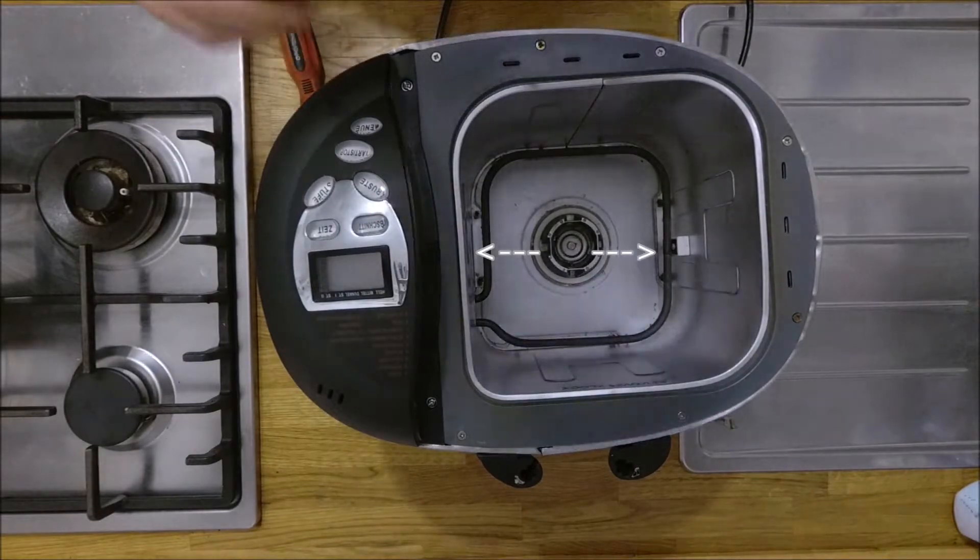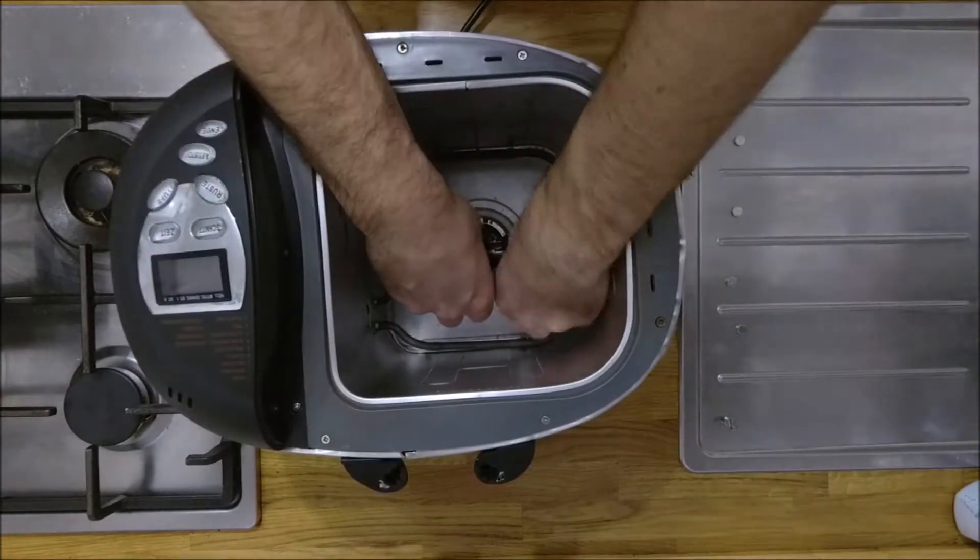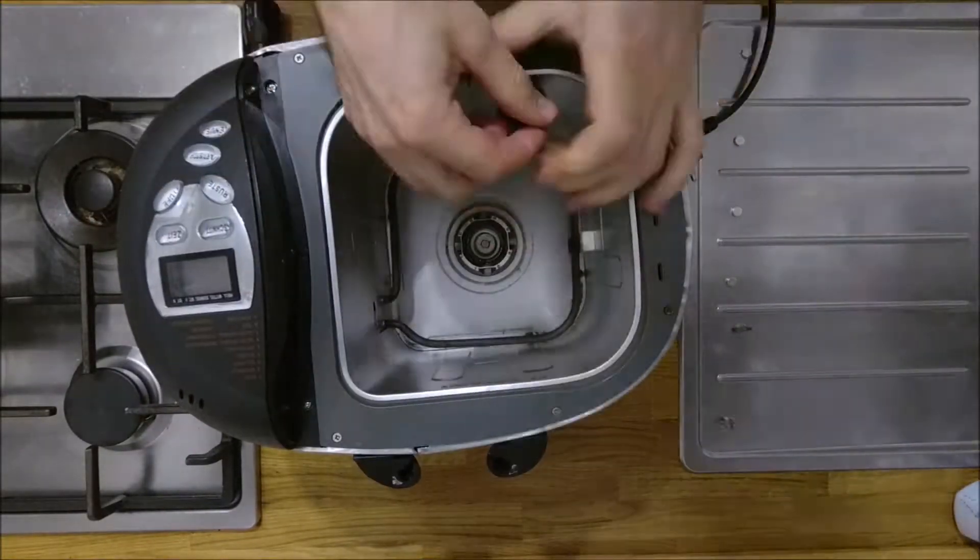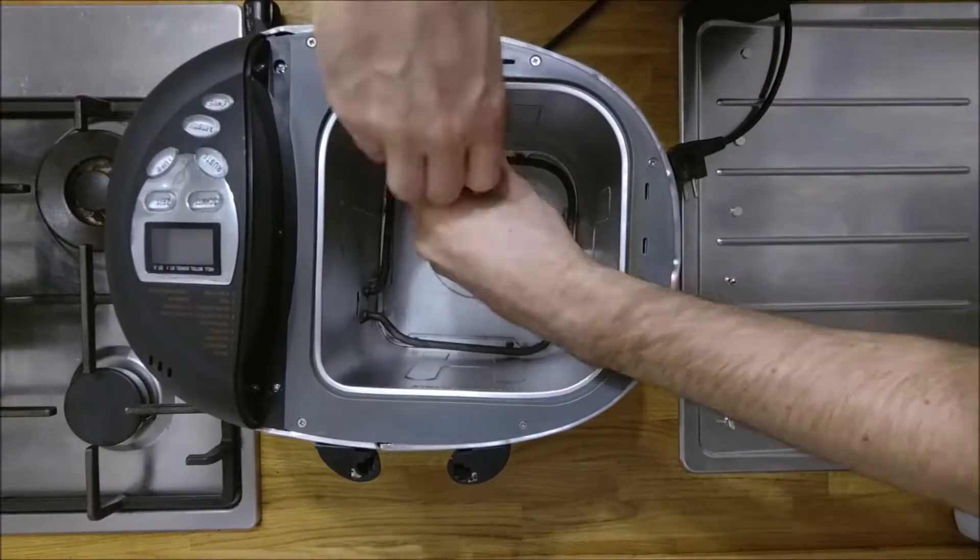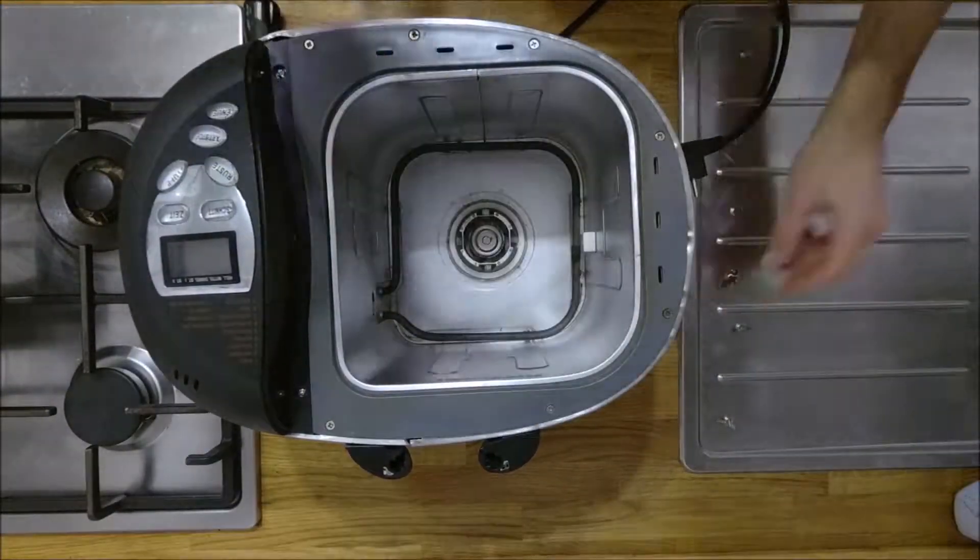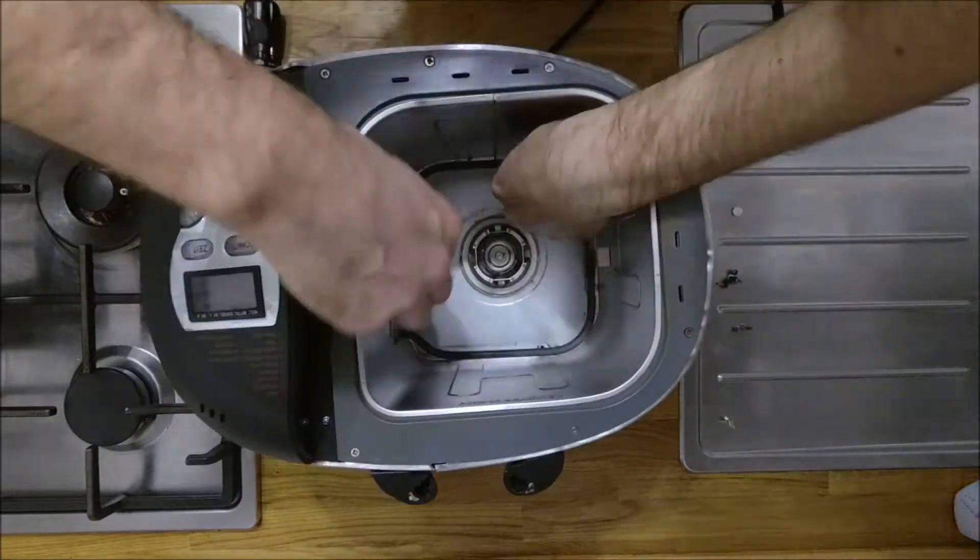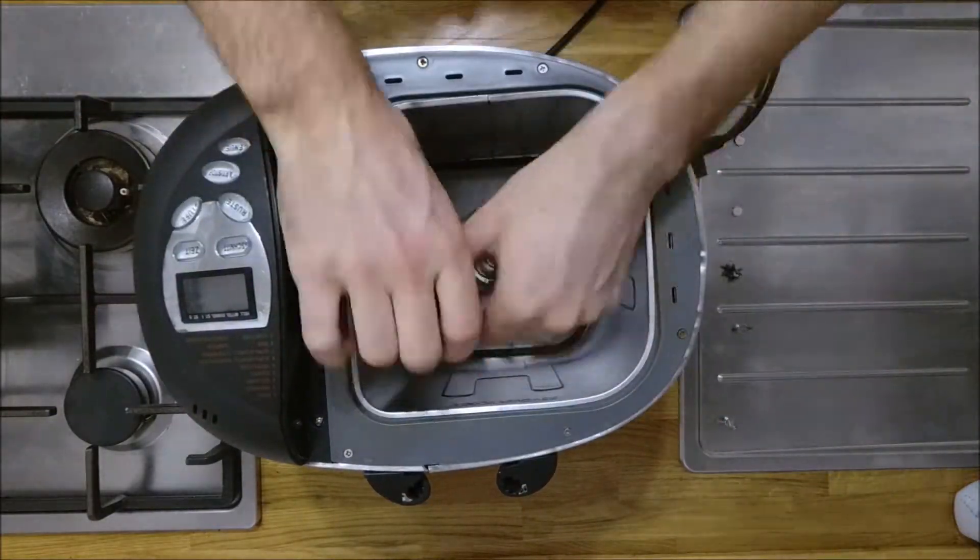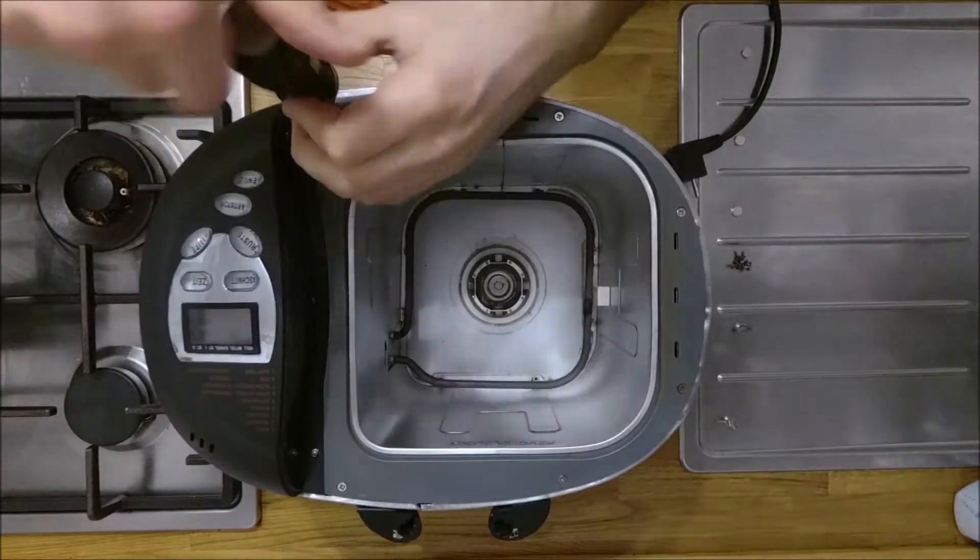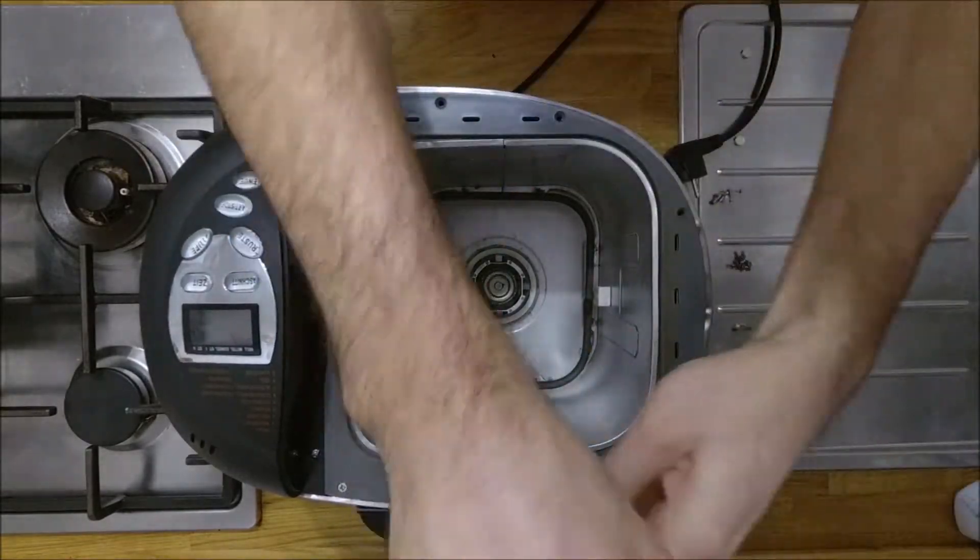There are two screws on the inside—you can only see one being removed here because the previous owner had already removed the other one. Next, go around the base and unscrew all the screws securing the heat shield onto the base, then unscrew all the screws holding the gray plastic piece to the surround.